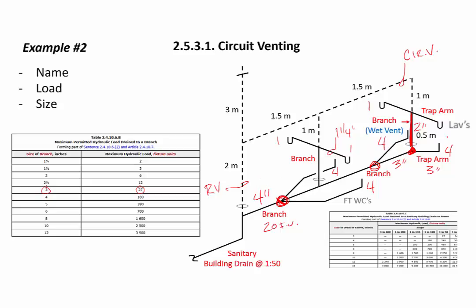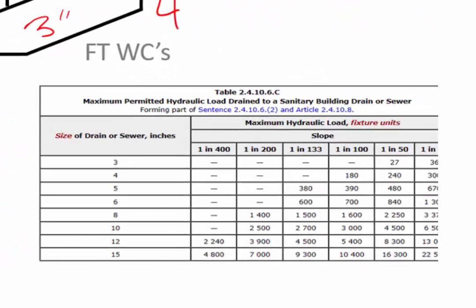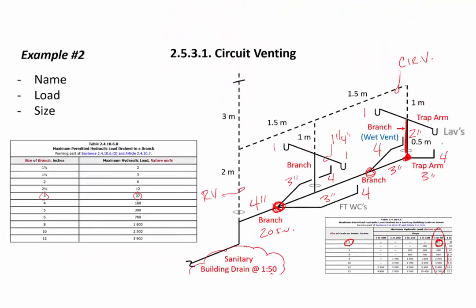So four inch is required downstream of this double-Y connection — a four-by-three double-Y picking up three inch trap arms for the other water closets. The sanitary building drain is installed at 1 in 50, so we look at that vertical column. For 20 fixed units the table says we can have three inch up to 27, but we're already four inch upstream, so we'll need to stay four inch for consistency. Now we're going to look at sizing the venting.